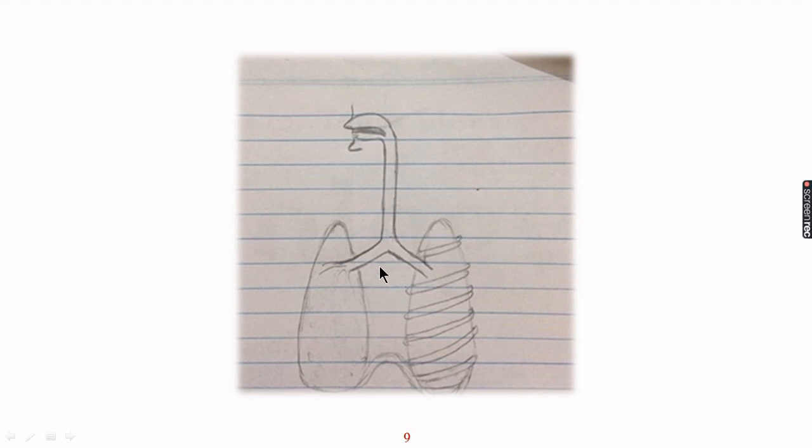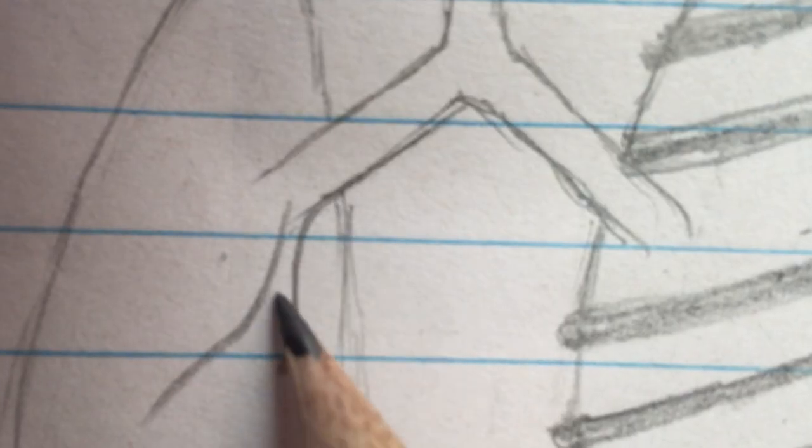We have made the ribs. Now in the right lung we will show only the internal structure in which bronchus enters. It divides and re divides and further divides to form many branches which are called as primary, secondary and tertiary bronchioles. At the end of the tertiary bronchioles there are alveolar ducts which have balloon like structures called alveoli. So we will draw this now.